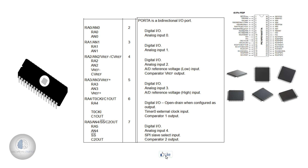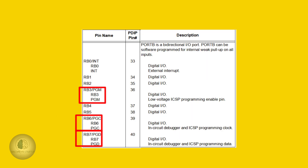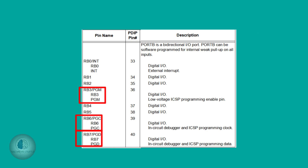Now, Port B is called Port B. The 3rd, 6th, and 7th pins are PGM, PGC, and PGD. PGM is Program Memory, PGC is Program Clock, and PGD is Program Data.